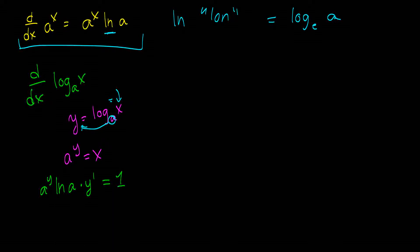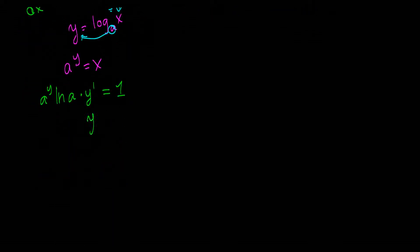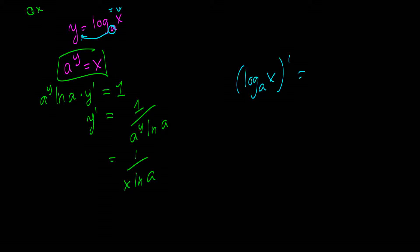Alright, so now what we can do is we can bring everything that's not y prime over to the right side. So, 1 divided by a to the y, ln a. And we do remember that a to the y is equal to x. So, the derivative of log base a of x is equal to 1 over x, ln a. So, there's a nice derivative right there. In fact, I will summarize it right here. Log base a of x is equal to 1 over x natural log a.